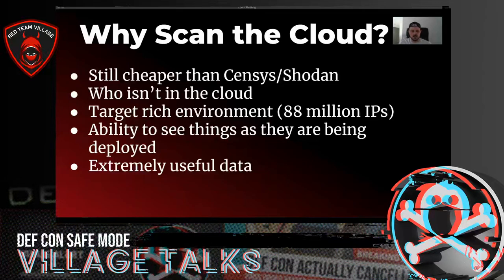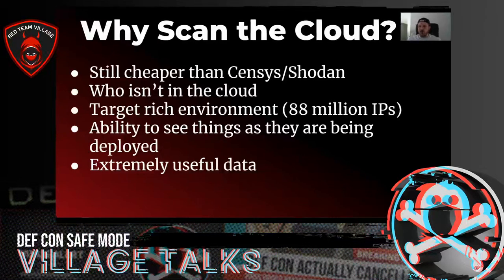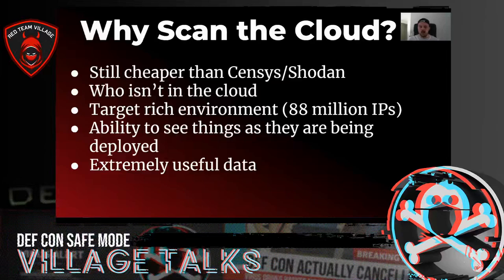That's just in their EC2 space or compute space — not counting Lambda functions with pulled-up IP addresses, but 88 million IP addresses that could actually be spun up for somebody's instance. Organizations, especially large ones, use the cloud to spin up quick and easy development boxes and test things on the edge. If we can get really good coverage and insight into what's happening in the cloud, we can find some really cool targets and get some really useful data out of it.